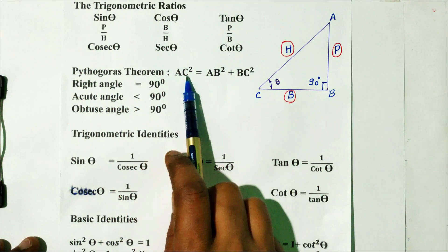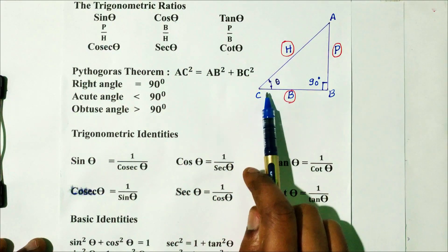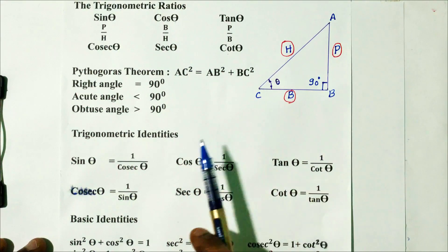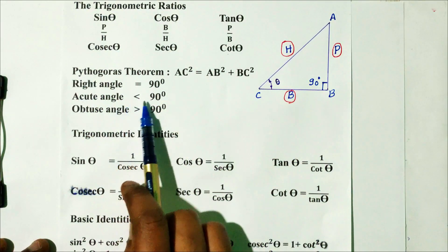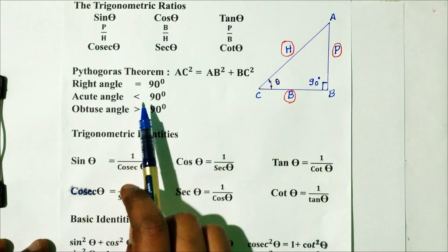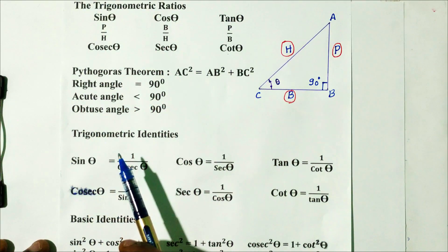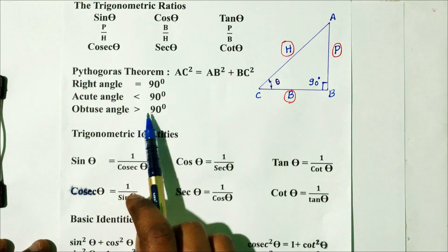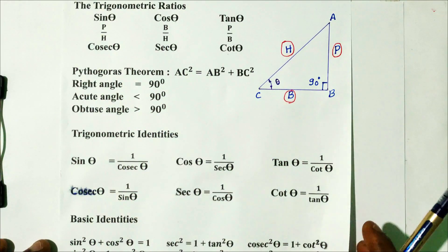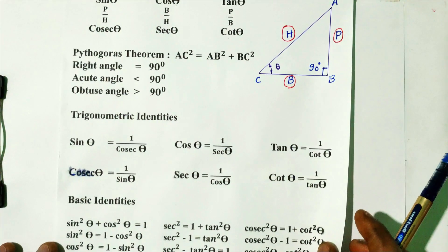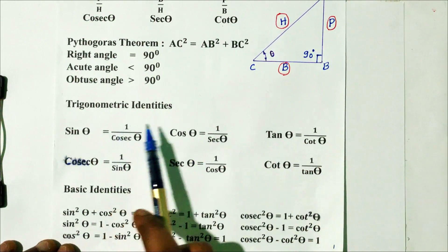The Pythagoras theorem is important — this is basic: AC² = AB² + BC². Right angle should always be 90 degrees. Acute angle should always be less than 90 degrees. Next, some basic important formulas: trigonometric identities.